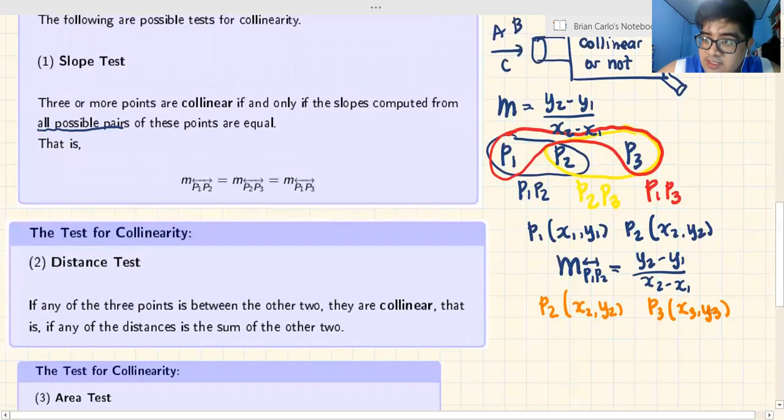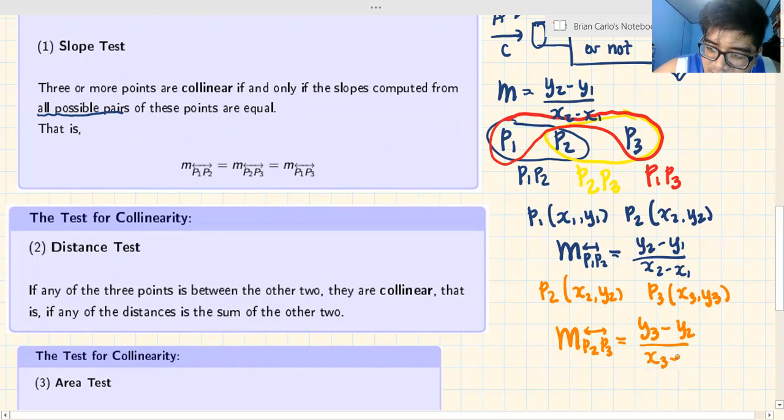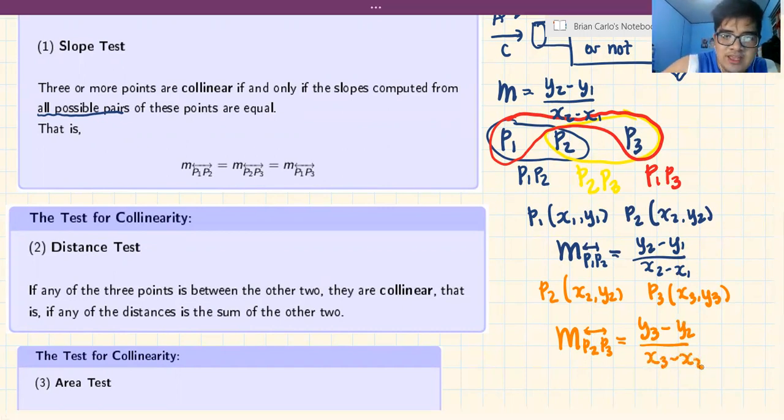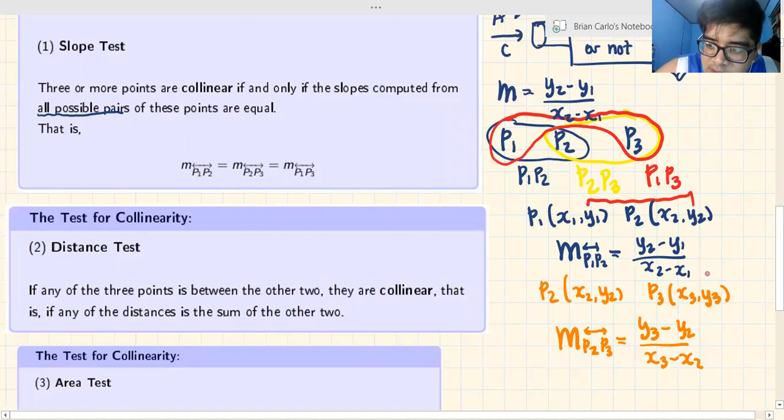For P2 with coordinates x2,y2 and P3 with x3,y3, the slope M(P2,P3) is y3 minus y2 over x3 minus x2. The pattern is the same - it becomes y3 minus y2 over x3 minus x2.